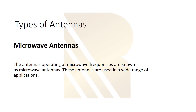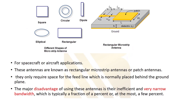Moving on to microwave antennas — antennas operating at microwave frequencies are known as microwave antennas. These antennas are used in a wide range of applications. When we say microwave frequencies, it means we have a really high frequency. They are called microstrip antennas, as you see here.